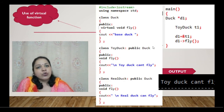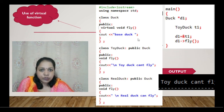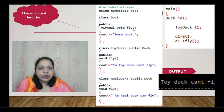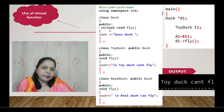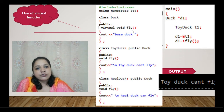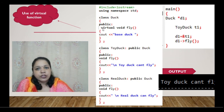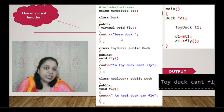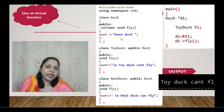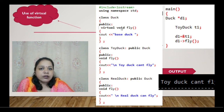To fix this, there is only one change needed in the base class: prefix the function with the keyword virtual. Whenever you define a function in the base class, add the keyword virtual before it. This change is made only in the base class function, not in the derived classes.